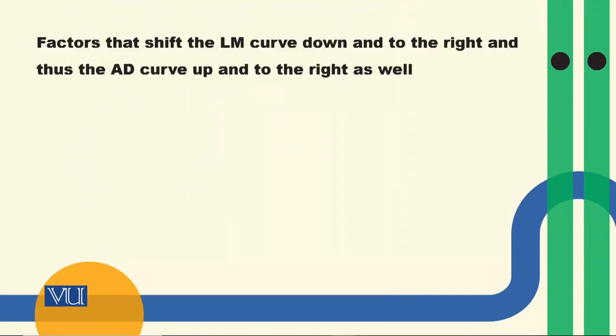Second — demand کہاں سے determine ہو رہی ہے? By the intersection of IS and LM curve. اب ہم LM کی بات کرتے ہیں کہ LM curve کے shift ہونے سے کیسے aggregate demand curve shift ہوگا. IS curve تھا، LM curve تھا، aggregate demand determined ہوگی — تو LM curve اگر downward shift ہوگا تو this will increase the aggregate demand and this will shift the aggregate demand curve to the right.